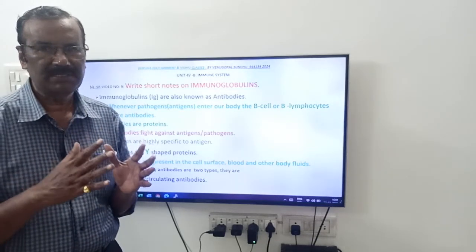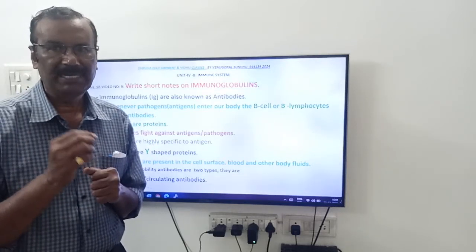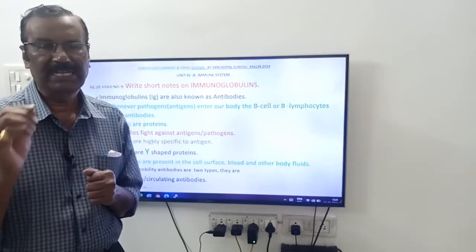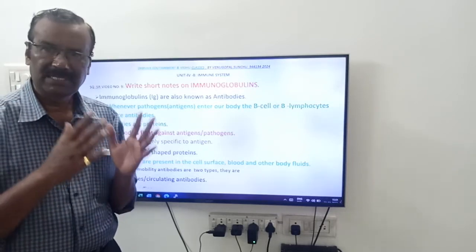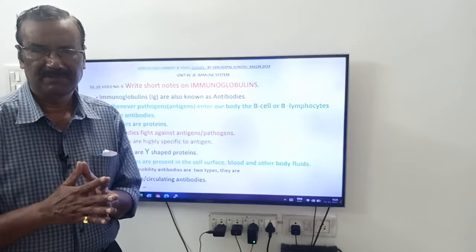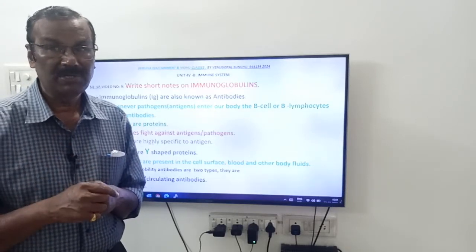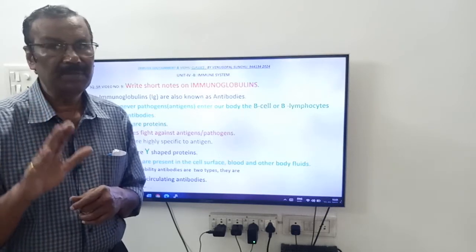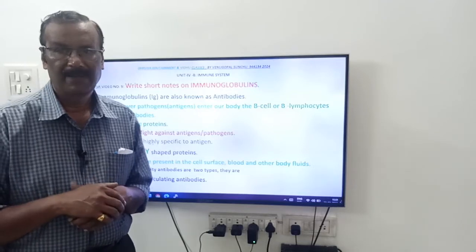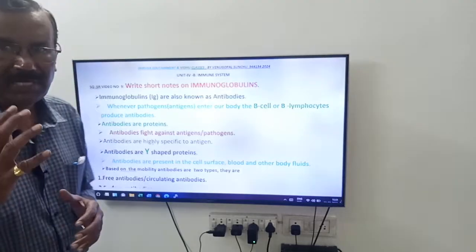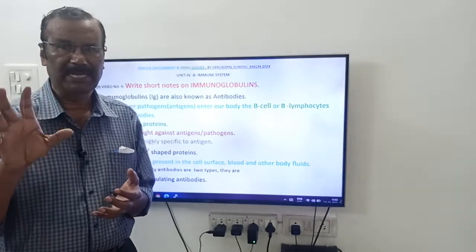Immunoglobulins are expressed as the symbol Ig — capital I, small g. Ig indicates immunoglobulins. These are antibodies. Remember one thing: all antibodies are immunoglobulins, but all immunoglobulins are not antibodies.